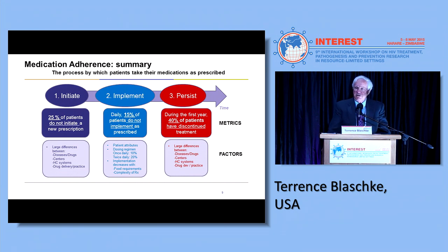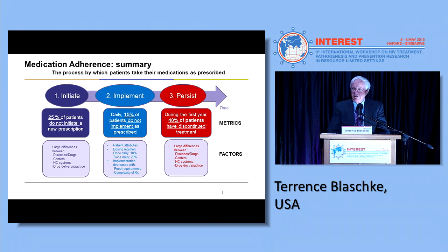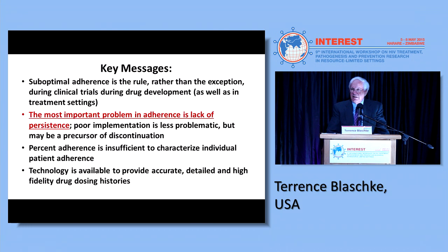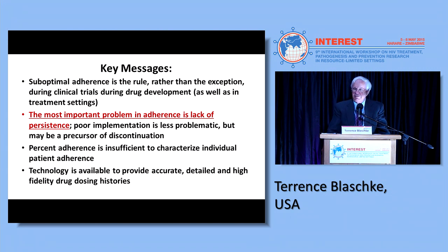Going back to the summary: about 25% of patients do not initiate a prescription; on each day about 15% of patients don't take the medicine as prescribed; and over the course of therapy, 40% of patients discontinue treatment early. The bottom panels indicate factors that influence each of those processes — initiation, implementation, and persistence. The key message is that suboptimal adherence is the rule rather than the exception, both in clinical trials and treatment settings. The most important problem is lack of persistence. We do have technology available to provide accurate, detailed, high-fidelity, high-resolution drug dosing histories.